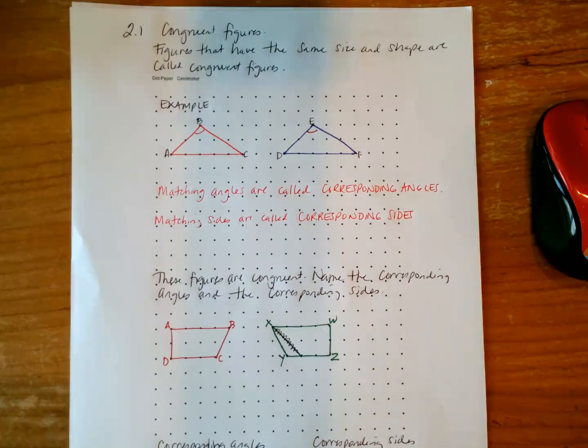As we get into Lesson 2.1, we're going to be entering a unit that is all about transformations. So congruent figures, translations, reflections, rotations, similar figures, and then we'll be solving for the perimeters and areas of those similar figures.